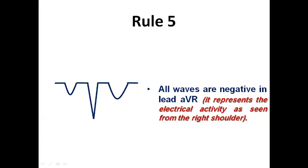Rule number five looks at AVR, where all waves should be negative. This is because lead AVR's positive pole is directed at minus 150 degrees, placing it in the right upper quadrant. Therefore, the electrical activity is directed away from AVR's positive pole, which explains why the P-wave, QRS complex, and T-wave should all be negative in AVR.